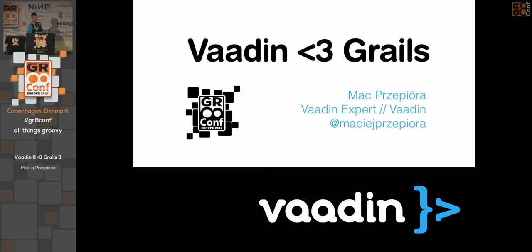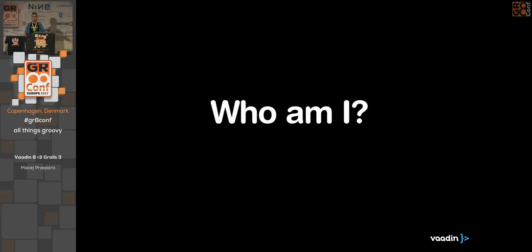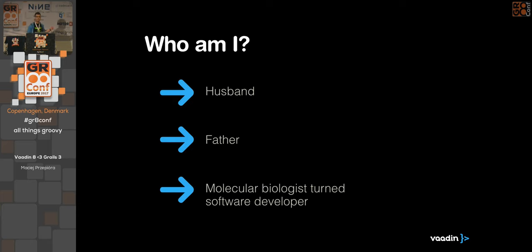Hi, my name is Maciej Przepiura, but everyone who does not speak Polish prefers to call me Mag. I'm going to talk to you about Vaadin and Grails. Who am I? Why am I here? Basically, I'm a husband, a father of two daughters, and a molecular biologist who turned into a software developer.